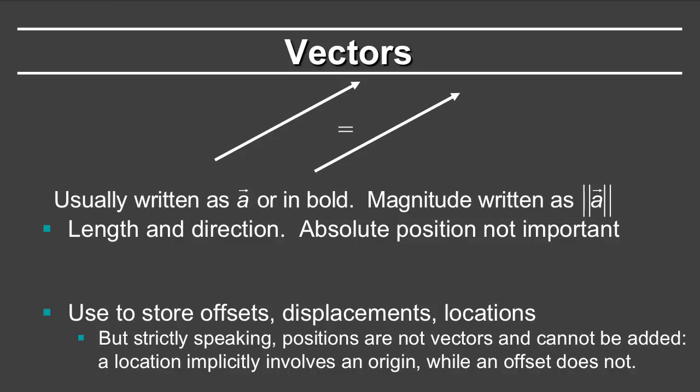We'll start by talking about vectors. Vectors are usually written with the vector symbol, so this is the common vector symbol, an arrow on top. Or if you look at a textbook, they are often written in bold. The magnitude is written in the standard way by putting a norm symbol around the vector. Vectors have a length and they have a direction. The absolute position of a vector is not important, and so these two vectors are actually the same.